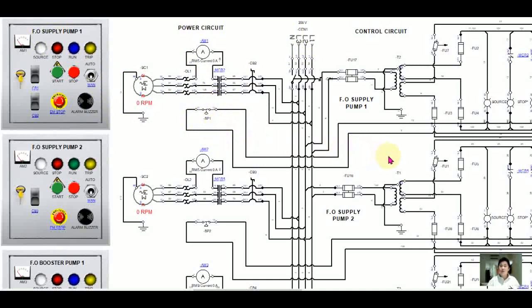Now you have the power circuit — the motor circuit — for the fuel oil supply pump number one. This part here is part of the control system, which we will discuss later. We will continue with the control circuit in the next part.